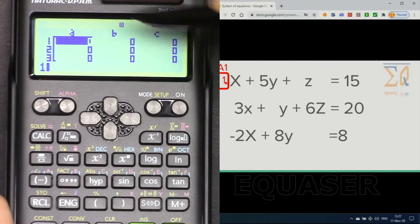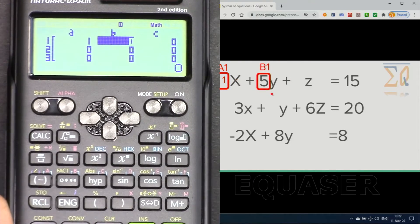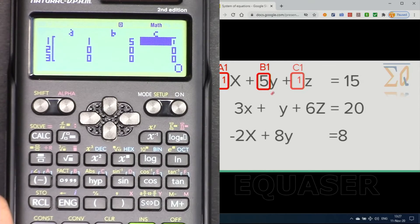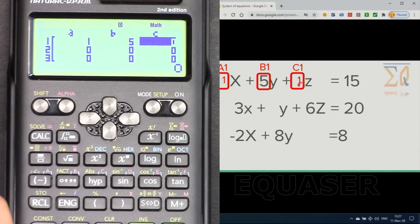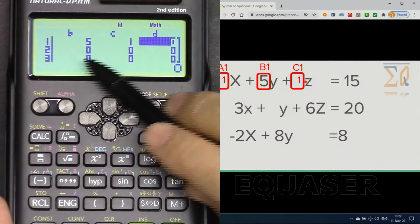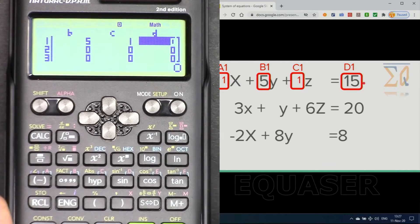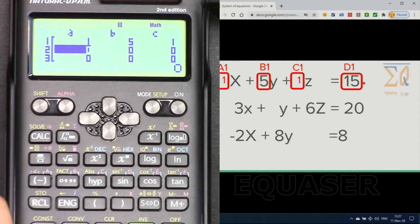In this case a1 is 1. I'm pressing 1, equal sign, and then b1 is 5, equal. c1 is 1 because the coefficient of z is 1, equal. And it moves to d because we were not able to see it. 15 and then press 15 and then press equal. Then it moves back here.